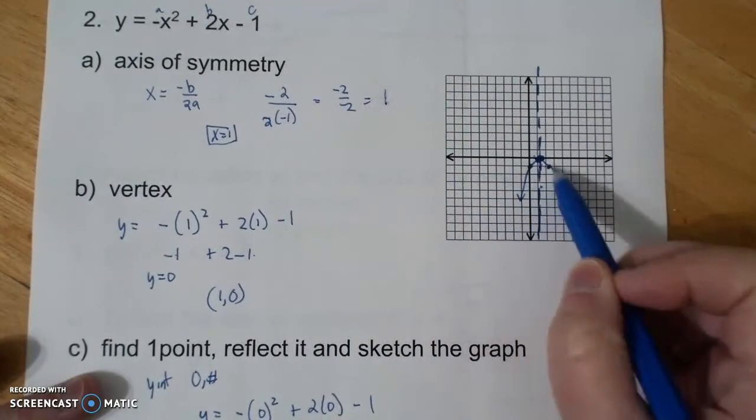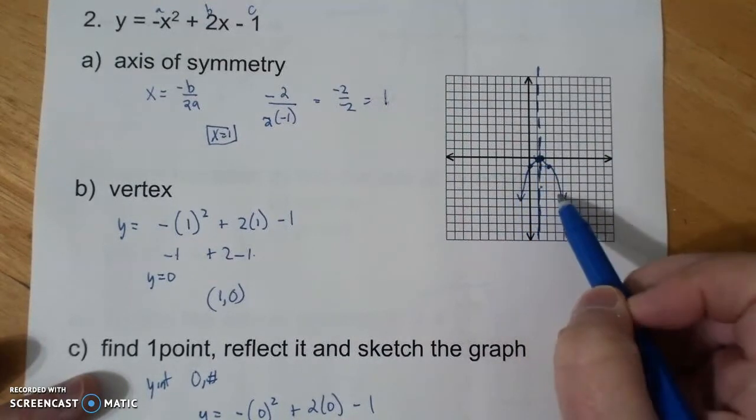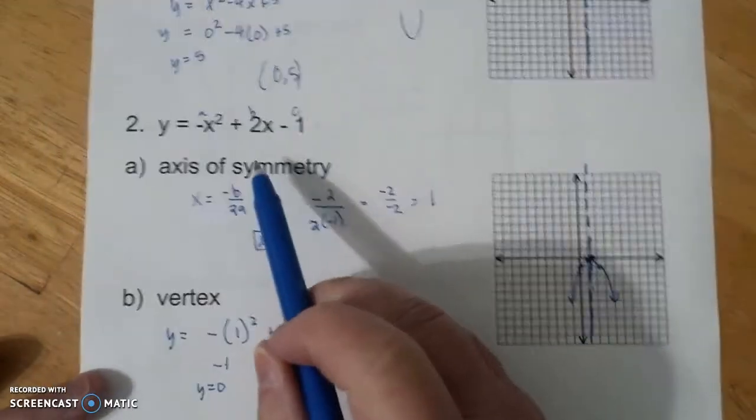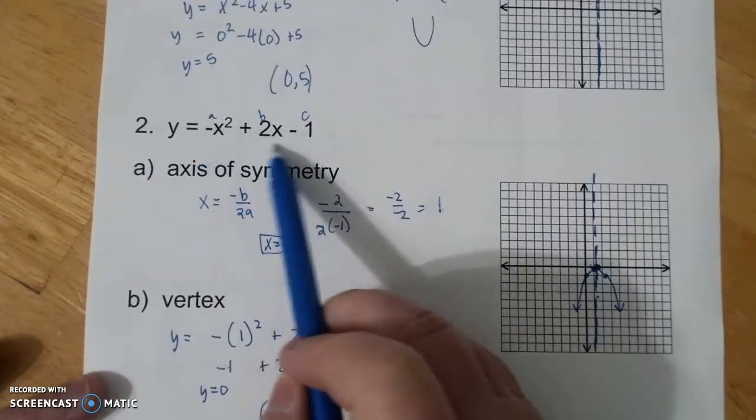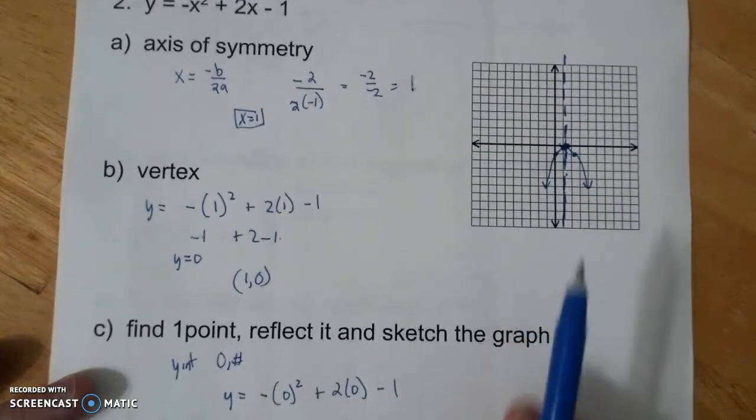And so it, like, I always called it a frown. But it has a maximum. And so you can look at quadratic equations and automatically know whether they're going to be minimums or maximums.